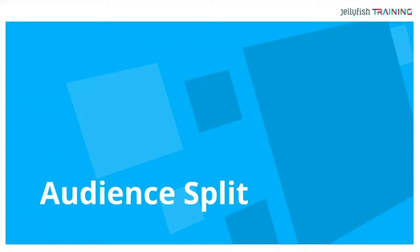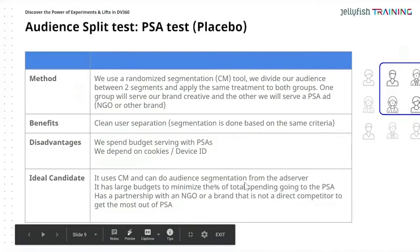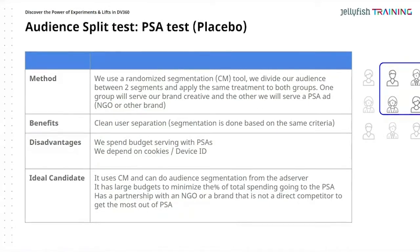One of the most common experiments in advertising is the audience split experiment — what we usually call the PSA (Public Service Announcement) test, or what others call the charity test. We'll discuss the method, benefits, disadvantages, and who the ideal candidate is. This is good to know when thinking about your clients or if you're managing a brand yourself.